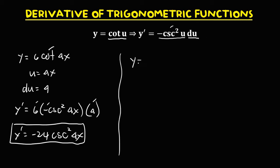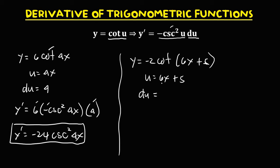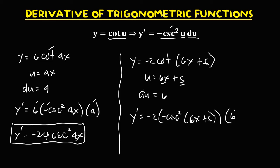For y equals negative 2 cotangent of 6x plus 5, u equals 6x plus 5. The derivative of 6x is 6 and the derivative of 5 is 0, so du equals 6. To find the derivative: negative 2 times negative cosecant squared of 6x plus 5, times du, that's 6. So y prime equals negative 2 times negative 1, that's positive 2, and positive 2 times 6, that's positive 12, times cosecant squared of 6x plus 5.